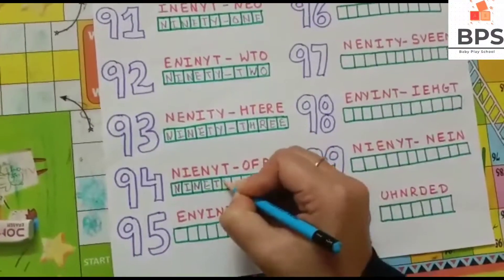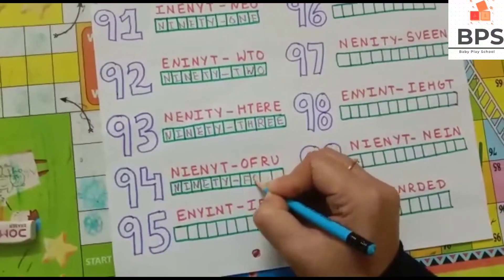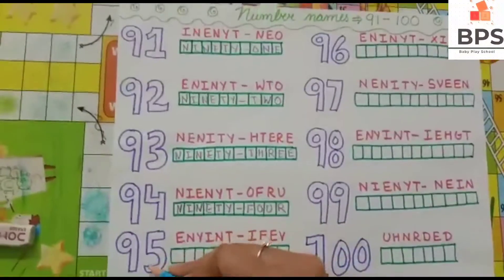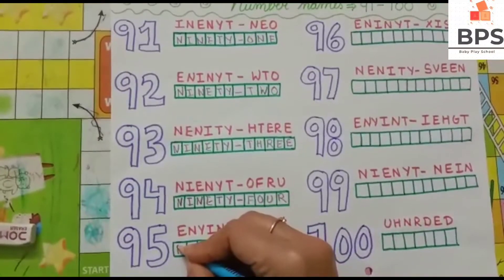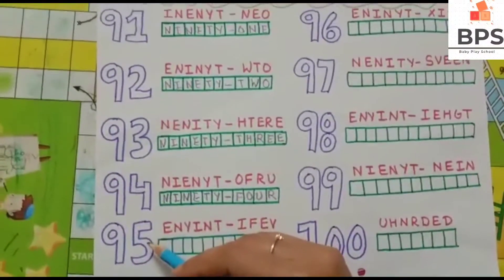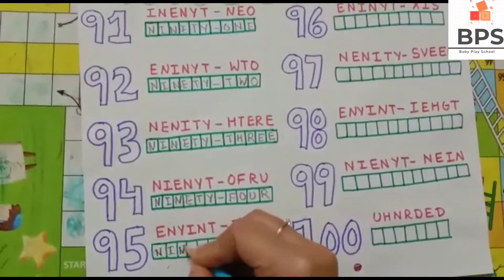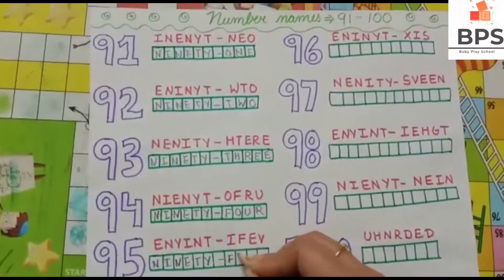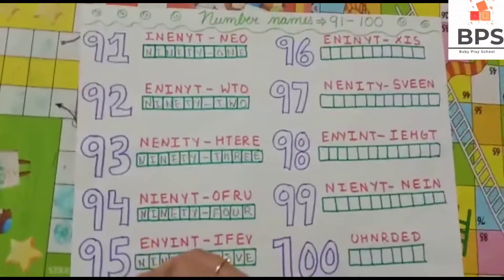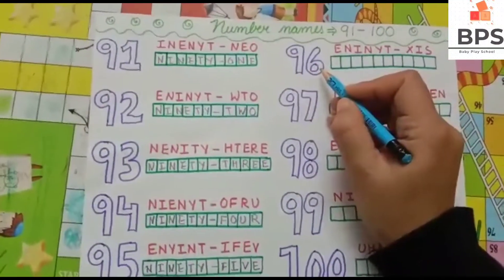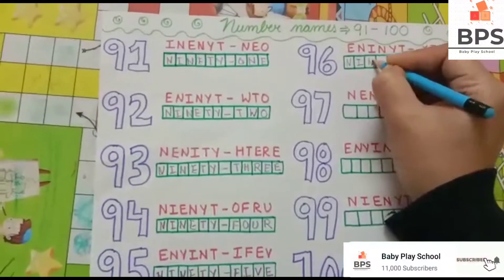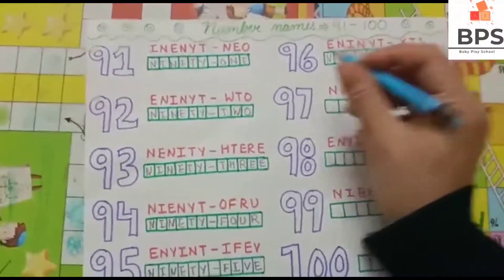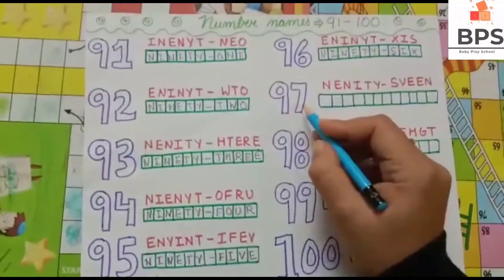95 — N-I-N-E-T-Y, 90. 97 — N-I-N-E-T-Y, 90, S-I-X, 6, 96. Then 9, 7, 97.